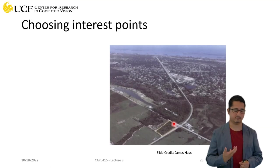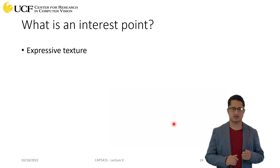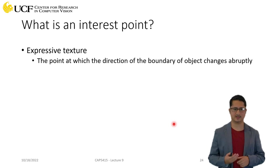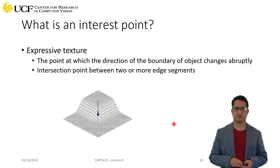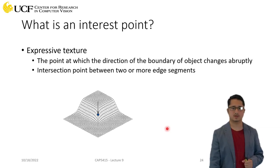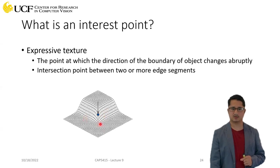Now let's describe what interest points are. They have certain properties — for example, they should have some kind of unique texture. There are a lot of different variations; we'll try to cover some of those. To be concrete, we can define an interest point as a location where certain boundaries are actually changing abruptly.